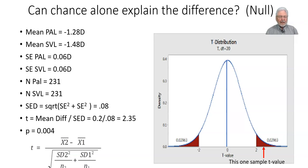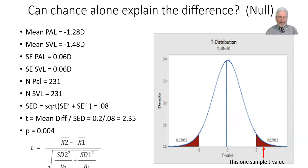We first have to look and see if chance alone can explain the difference. No matter what study you do, samples are taken — you don't know the real underlying truth. You take a sample, measure, and see what happens. So we're going to talk about how when we test, we use something called a t-test.